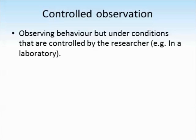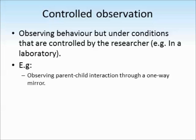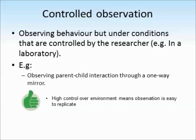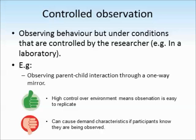Another type of observation is called a controlled observation. This is where we observe behaviour under conditions controlled by the researcher, maybe in a laboratory. An example could be observing parents and children interacting through a one-way mirror — they might or might not know they're being observed. Ainsworth's Strange Situation study is a good example of a controlled observation. These are good because they have a high level of control over the environment, so they're easy to replicate. However, because participants might know they're being observed after being brought into a lab, it can cause demand characteristics, so the behaviour observed might not be completely natural.